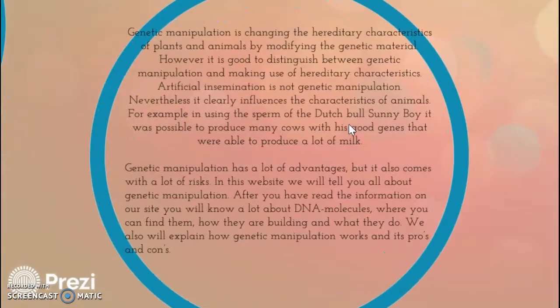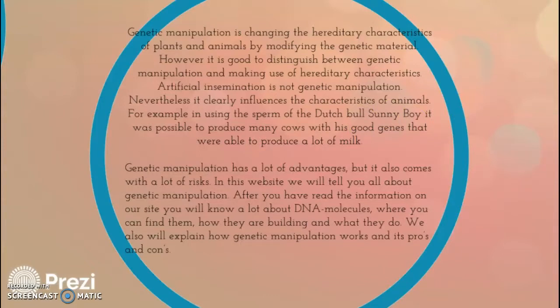Genetic manipulation is changing the hereditary characteristics of plants and animals by modifying the genetic material. However, it is good to distinguish between genetic manipulation and making use of hereditary characteristics. Artificial insemination is not genetic manipulation. Nevertheless, it clearly influences the characteristics of animals. For example, in using the sperm of the Dutch bull, Sunny Boy, it was possible to produce many cows with his good genes that were able to produce a lot of milk.